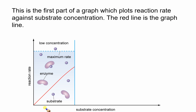Let's begin by looking at the axes of the graph. On the x-axis we've got substrate concentration, so as we move from left to right the amount of substrate increases. On the y-axis we've got reaction rate — this is the speed of the reaction, how quickly the substrate is changed.